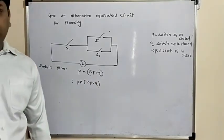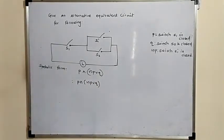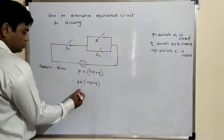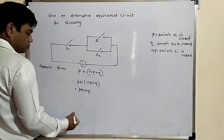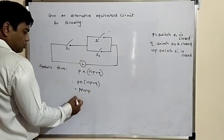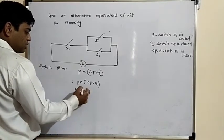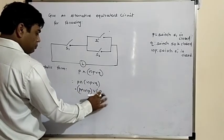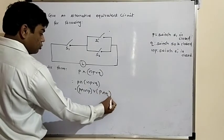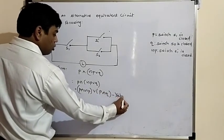You have to apply the laws. The first is the distributive law. Applying this to P and (negation P or Q), you get: P and negation P, or P and Q. This is the distributive law.